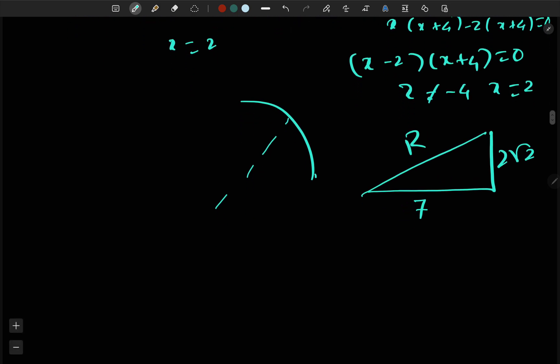So I will just apply Pythagorean theorem here. r² will become 7² plus (2√2)², which gives me 49 plus 8, which is 57, and r becomes √57. So this is my answer. Hope you get this concept. Thank you so much for watching.